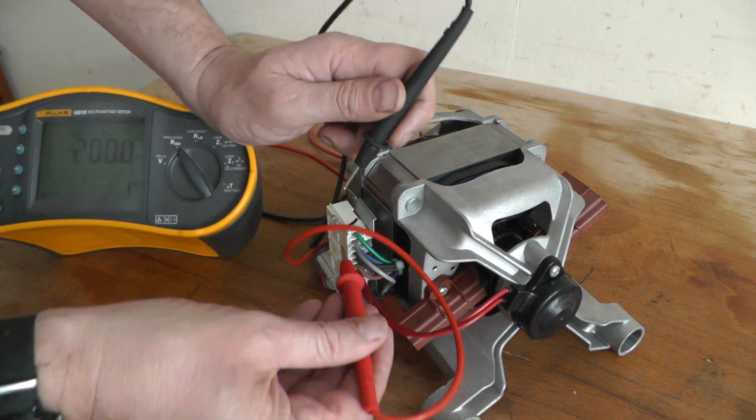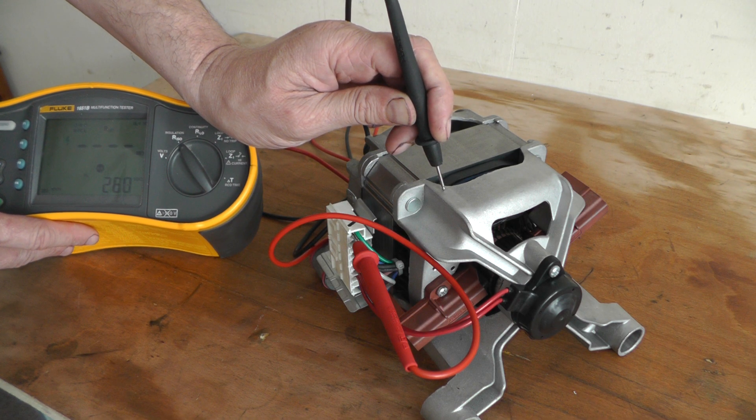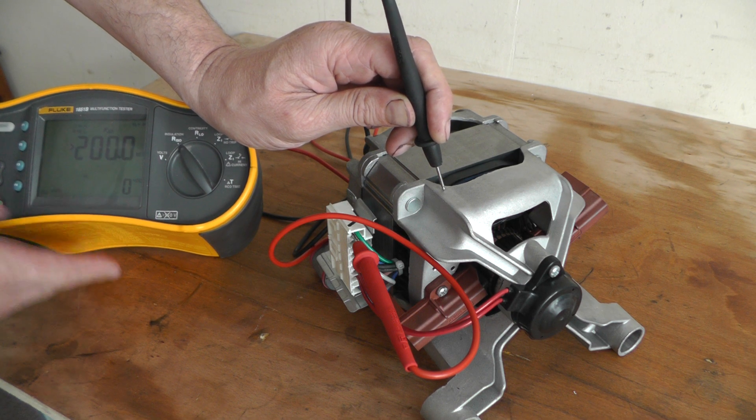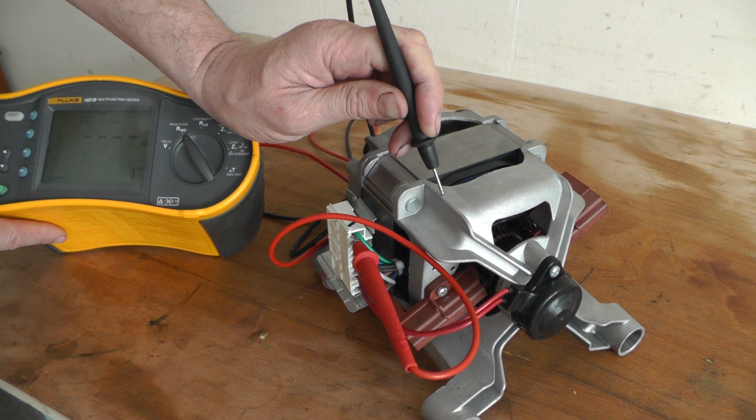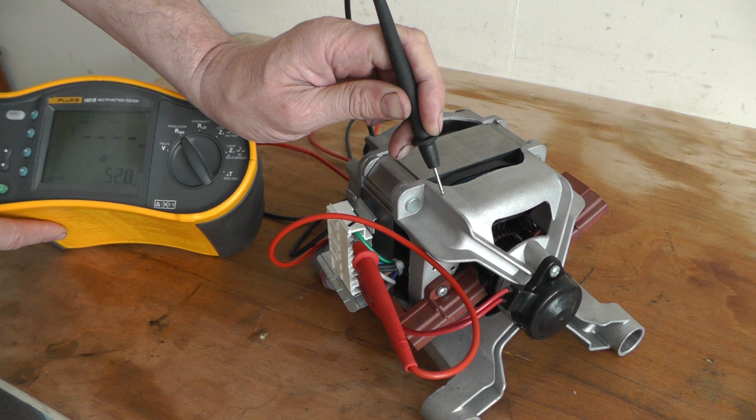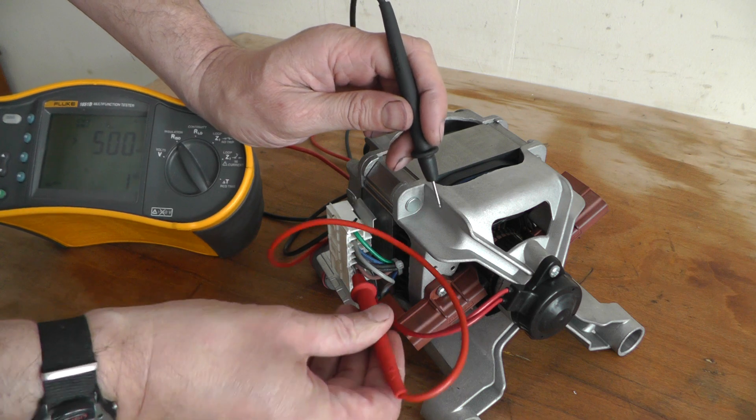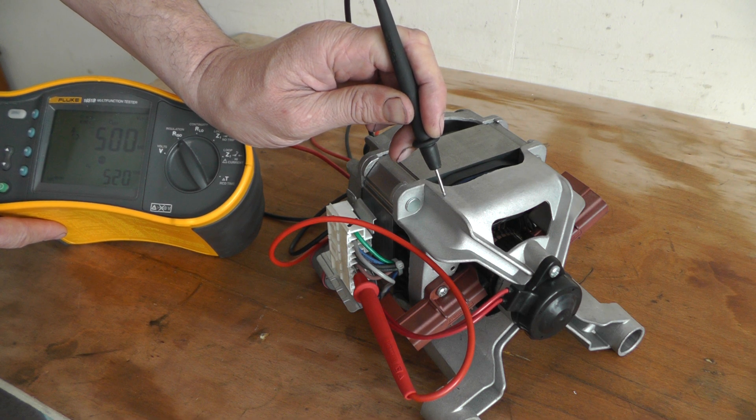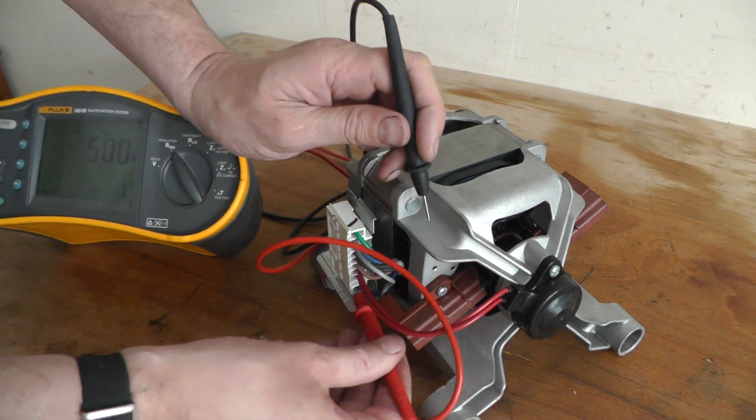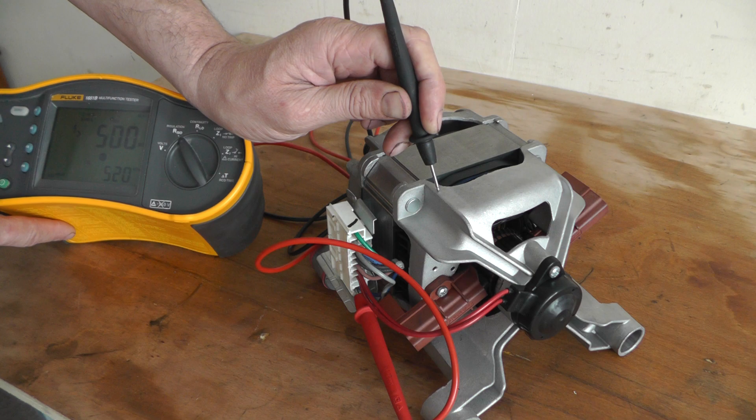Greater than 200 volts, so I'll do them all again but this time at 500 volts just to make sure. It should be greater than 500 now. Yep, greater than 500 mega ohms. And again on the second winding, and again on the third winding.